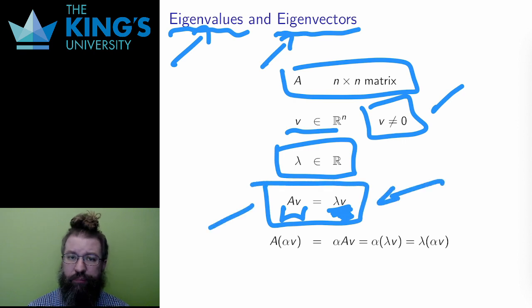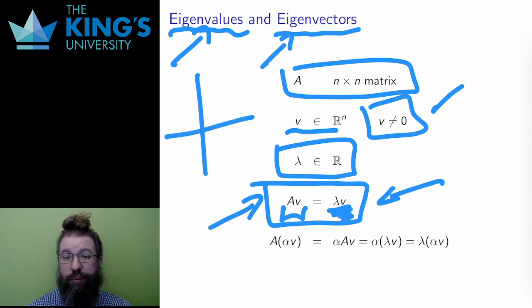What does this mean? Well, first it means that the direction of the vector is preserved. The matrix A does something to the vector, but it doesn't change its direction. It only changes its length.